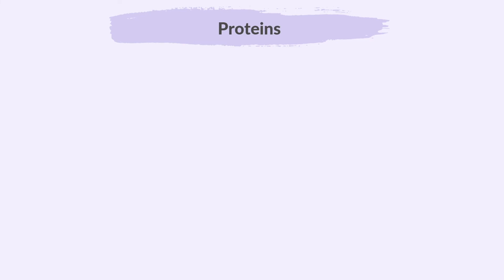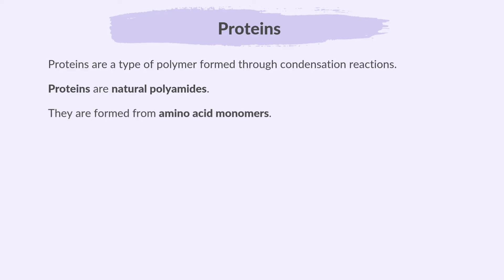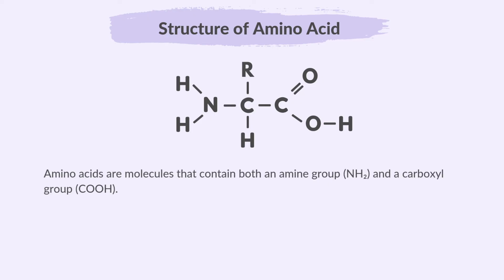Finally, let's discuss proteins. Proteins are a type of polymer formed through condensation reactions. Proteins are natural polyamides, formed from amino acid monomers. Amino acids are molecules that contain both an amine group and a carboxyl group, and each amino acid has a general structure.